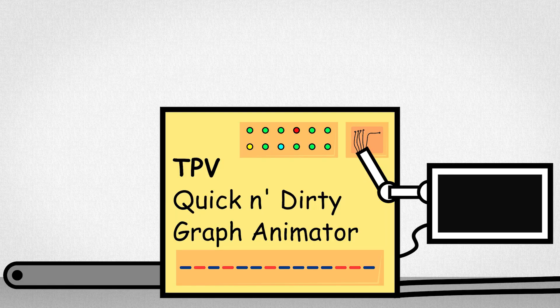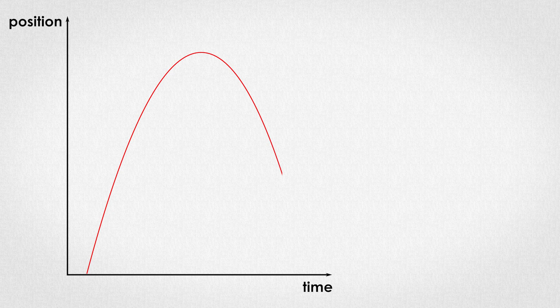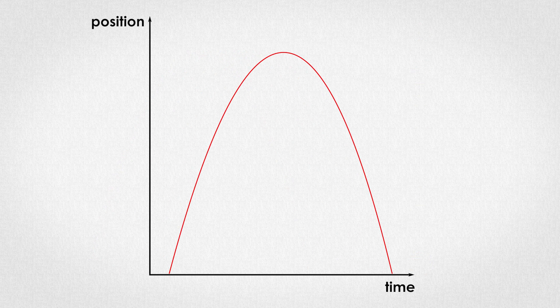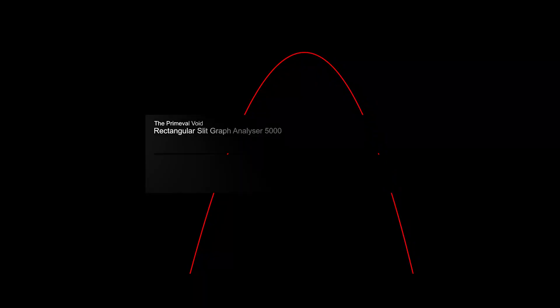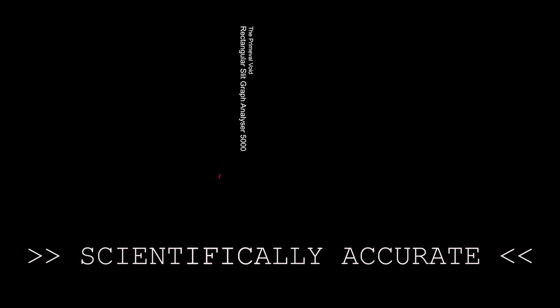Speaking of neat, there's a really quick and dirty way to look at graphs and animate them so to speak. Say you've got a graph describing the motion of a ball being thrown off. You have distance from the ground on the y-axis and time on the x-axis. All you have to do is make a rectangular slit, orient it like so and move it along the time axis. And voila, you see this red blob that represents the ball moving up and down. Except it's not just moving up and down, this is scientifically accurate. Take that Nolan!